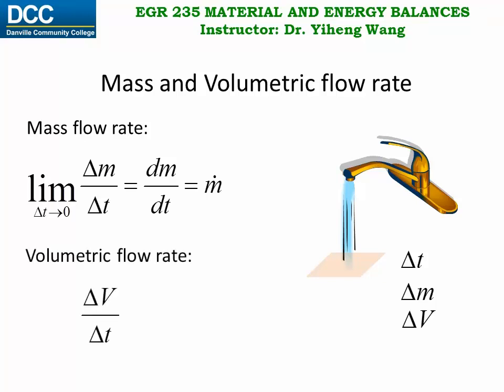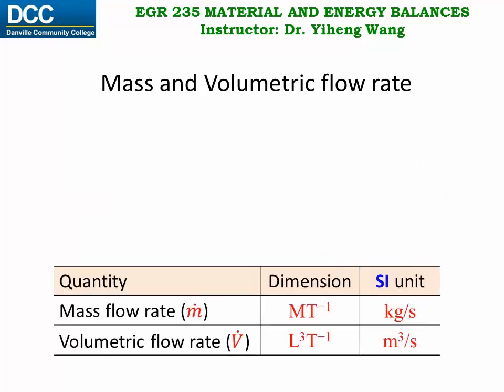Similarly, delta-V over delta-T is the average volumetric flow rate, but when delta-T approaches zero, this becomes the instantaneous volumetric flow rate, a differential quantity sometimes represented by the symbol Q. For mass flow rate, its dimension is mass over time and its SI unit is kilogram per second. For volumetric flow rate, the dimension is volume over time, or cubic length over time, and its SI unit is cubic meter per second. Since mass and volume are related through density, the mass and volumetric flow rates are also related through density.